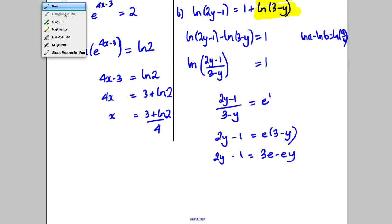So what I want to do is have these terms together maybe on the left hand side and these terms together on the right hand side. So I would have 2y add ey is equal to 3e add 1.